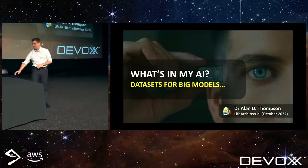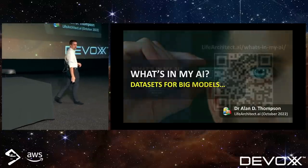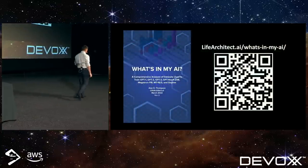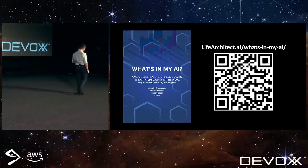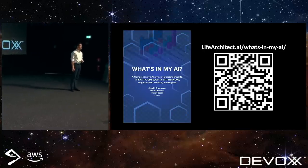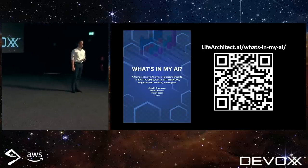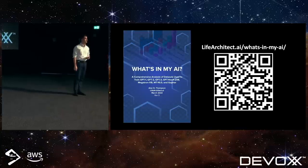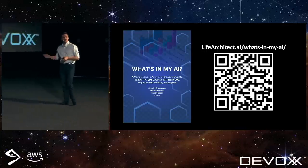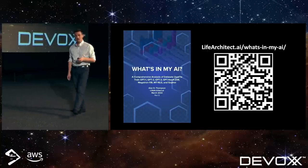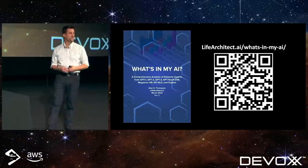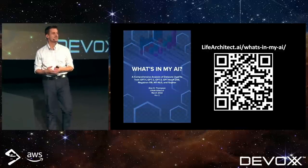There are a fair few models out there. I've already added a new model this morning. We're going to be talking about the data that is inside these models based on this particular paper. I'll have this showing again at the end, but that QR code will take you to a download of this paper — it's about 20 pages as a PDF.